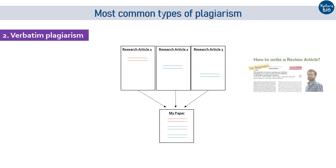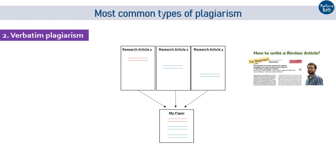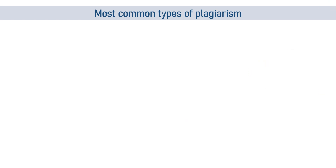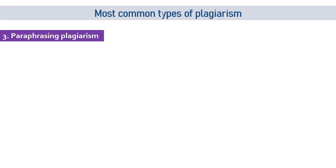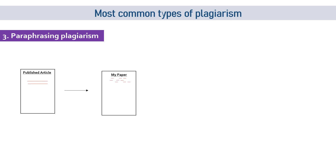For more information about how to write a review paper, you may check out my video. The third type is paraphrasing plagiarism. Experienced writers rephrase sentences copied from previously published papers and present them as their own. Authors and students sometimes do not understand that just changing the words does not make it novel unless the idea is novel. This practice is also unacceptable — you should always cite the original paper.